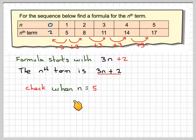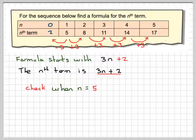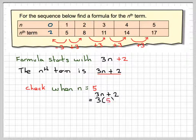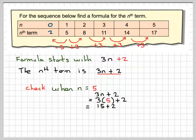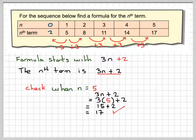And we're going to check when n is equal to 5. So, we'll check this case in my formula. I'm going to have 3n plus 2, which is equal to 3 times 5, because n is 5, plus 2, which is 15 plus 2, which is 17. And that is what I wanted. So, my formula is correct.